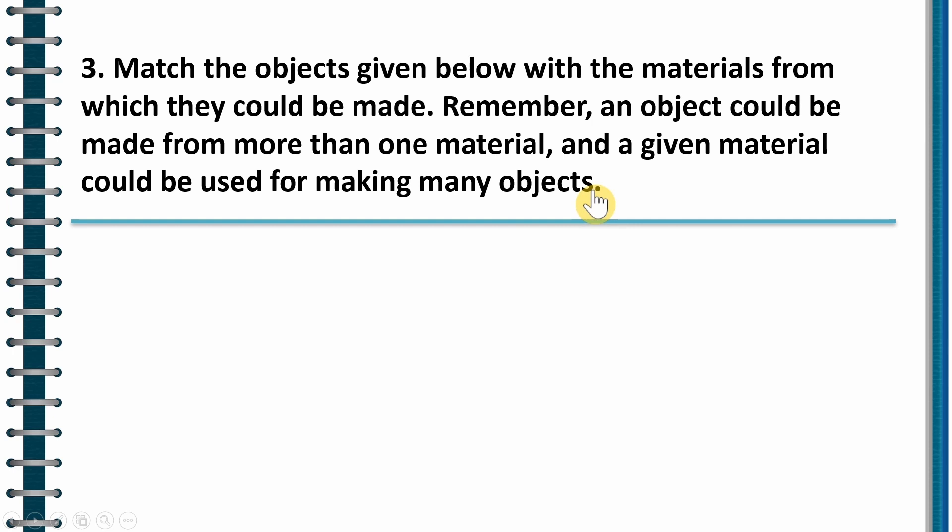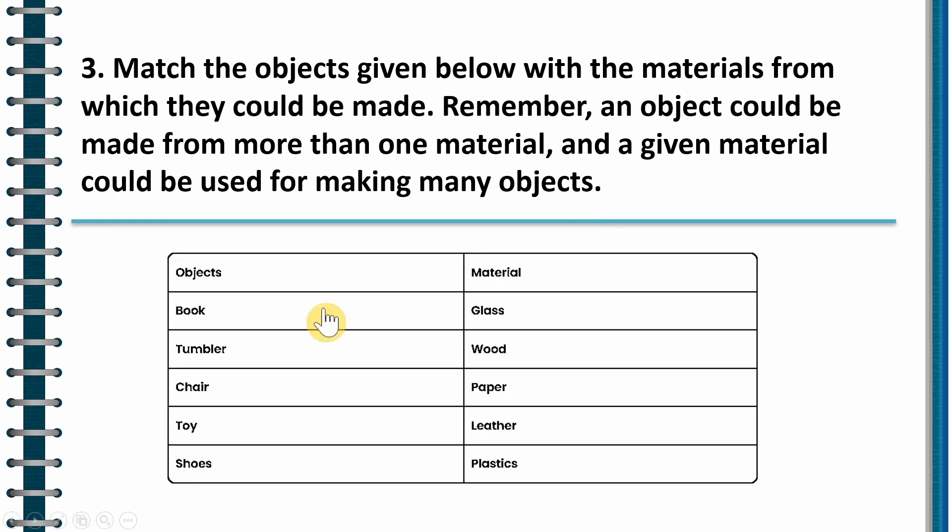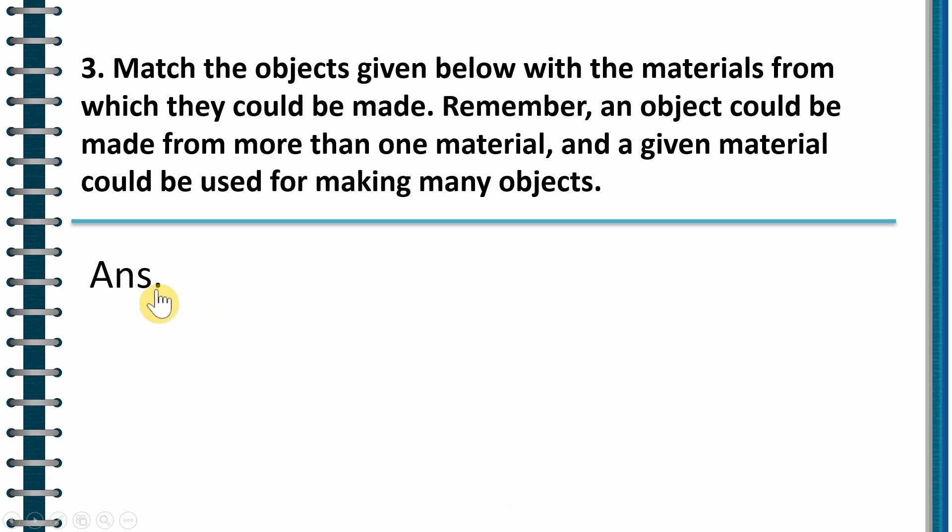Now the object list has book, tumbler, chair, toy, shoes. And material list has glass, wood, paper, leather, plastic.